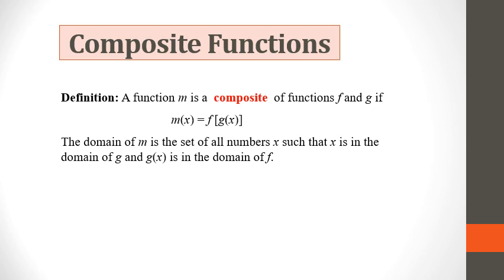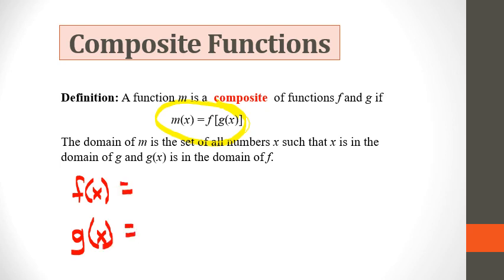For the chain rule, we're basically looking at derivatives of a composition of functions — in other words, one function inside of the other. It's really important to notice this function M of X, which is made up of F of X and G of X. It's important to notice which one is on the inside and which one is on the outside. If you look carefully, G of X is on the inside and F of X is the outside function.